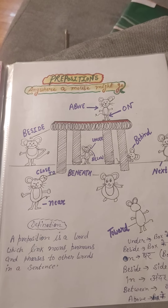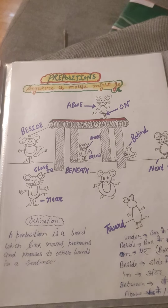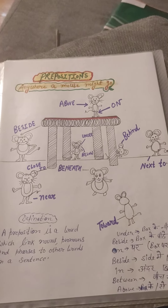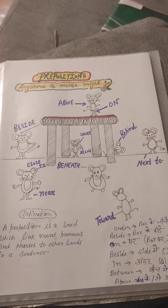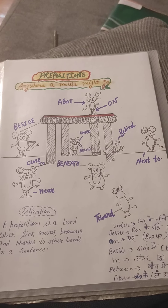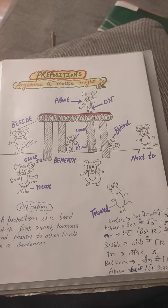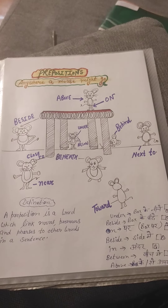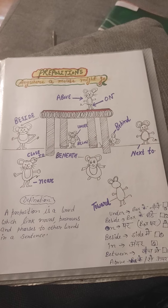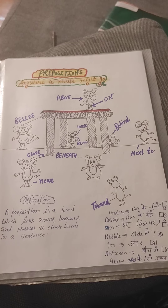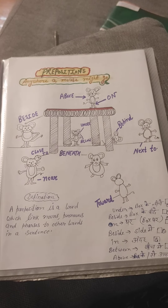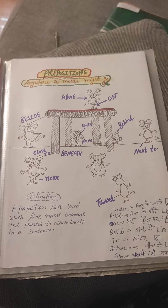Preposition. Anywhere a mouse might go. Above, on, beside, under, below, behind, close to, beneath, next to, near, toward.